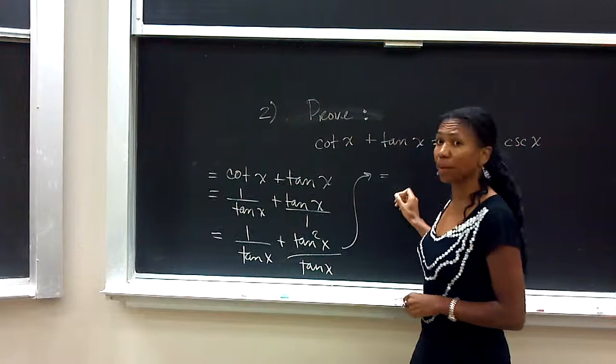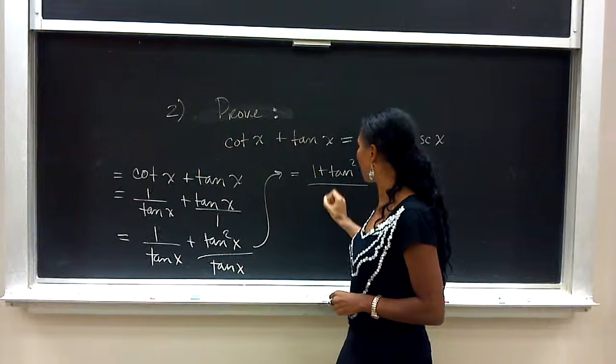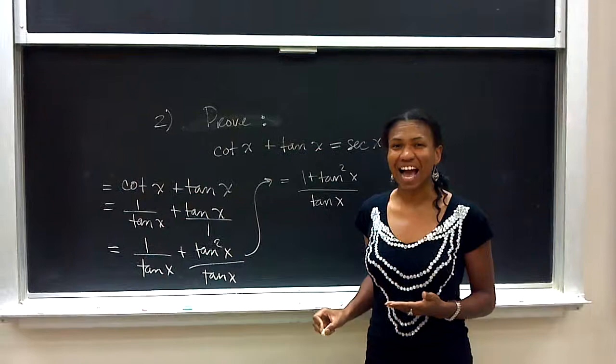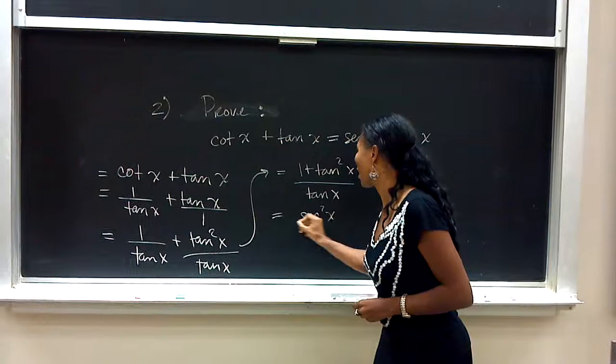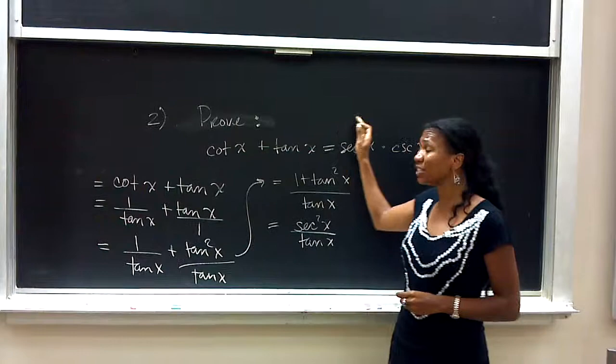This becomes 1 plus tangent squared x divided by tangent x. Now the good thing about the numerator is that this is a trigonometric identity. Do you remember what it is? 1 plus tangent squared x is equal to secant squared x over tangent x.